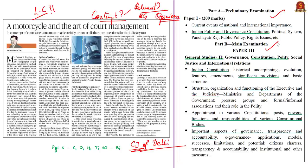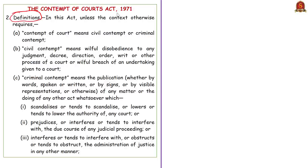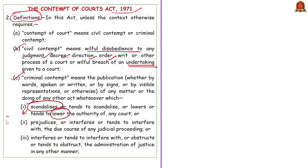First, what do we mean by contempt of court? According to Section 2 of the Contempt of Courts Act of 1971, contempt of court means civil contempt or criminal contempt. Civil contempt means willful disobedience to any judgment, decree, direction, order, writ or other process of a court, or it is the willful breach of an undertaking given to a court. Criminal contempt means the publication of any matter or doing any other act which scandalizes or tends to lower the authority of any court. The term 'scandalizing the court' refers to something that brings disrepute or disgrace to the authority and administration of law by the courts, creating distrust and disbelief in the minds of litigant public and the general public at large.